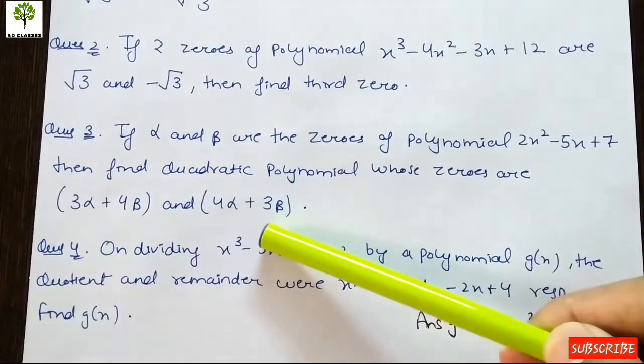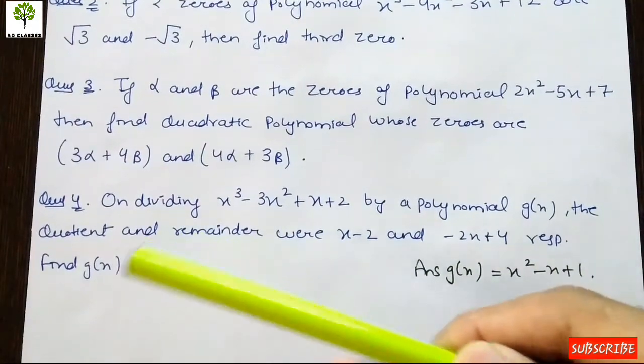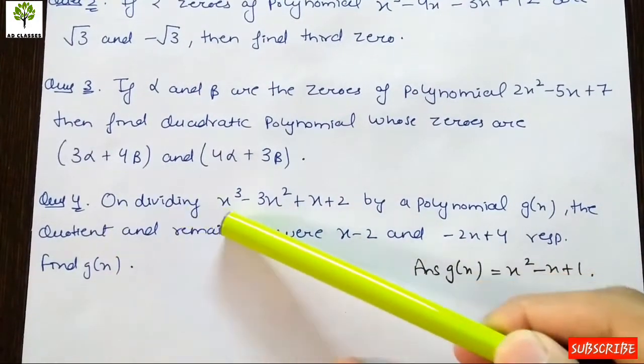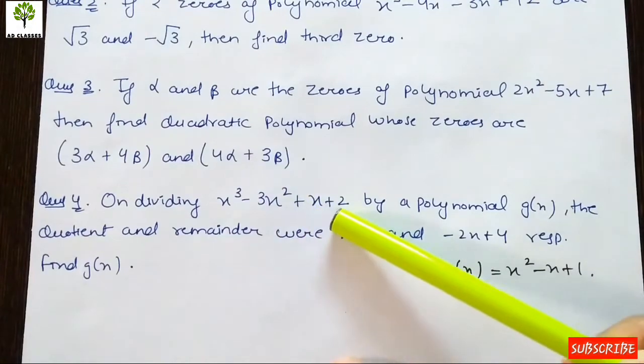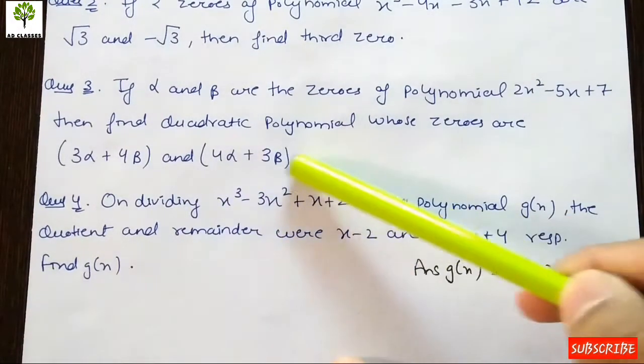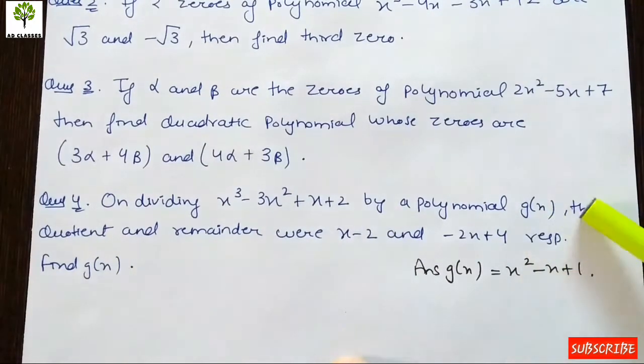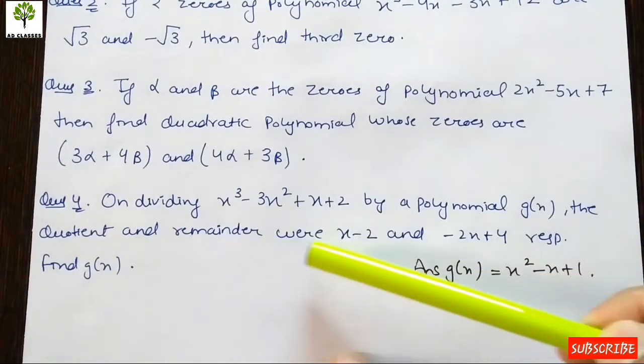Question 4: On dividing x³ - 3x² + x + 2 by a polynomial g(x), the quotient and remainder were x - 2 and -2x + 4 respectively.